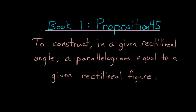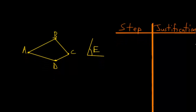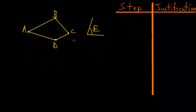For Book 1, Proposition 45 of Euclid's Elements: to construct in a given rectilineal angle a parallelogram equal to a given rectilineal figure. We start with a four-sided figure ABCD and a given angle E. Our goal is to construct a parallelogram equal in area to this four-sided figure and containing angle E. This is one of the longest propositions in Book 1.